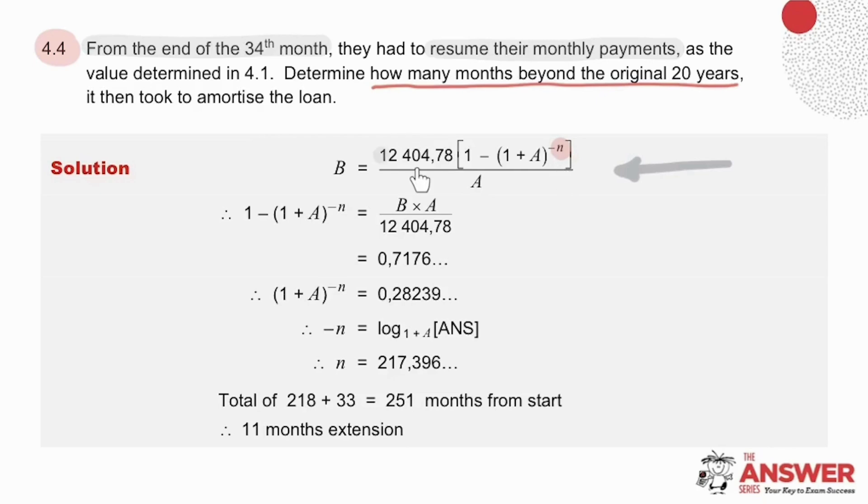The 12,404 rand and 78 cents is our monthly payments we calculated in 4.1. This value here is the outstanding balance we saved in memory B from 4.3 and so we go through the process of solving for N remembering to introduce the log function again at this point. The answer we get for N, 217.396, means that another 218 payments are necessary.